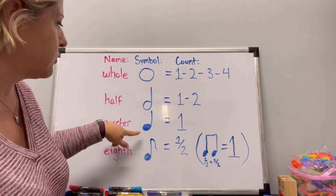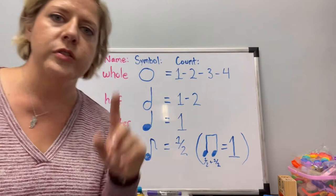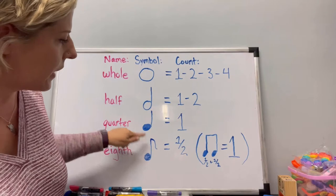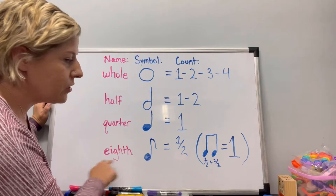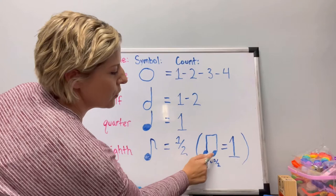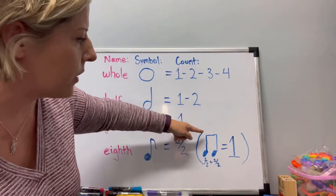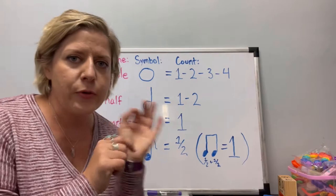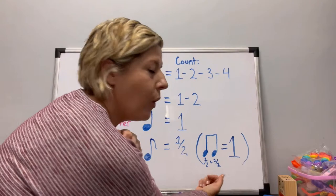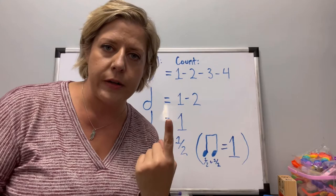The quarter note looks like the half note except it's filled in, and it gets one count. Then there's the eighth note, which looks like a quarter note but with a little flag added to it. When you connect two eighth notes together, they're joined by a beam. An eighth note gets half of a count, so imagine the math: half plus half equals one — two eighth notes are the equivalent of one count.